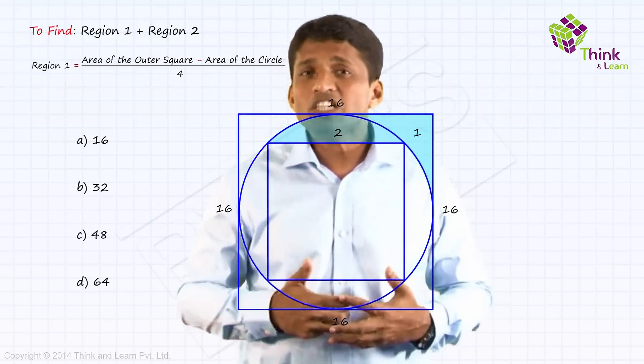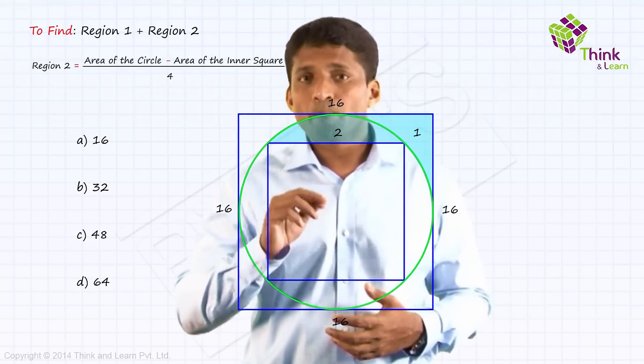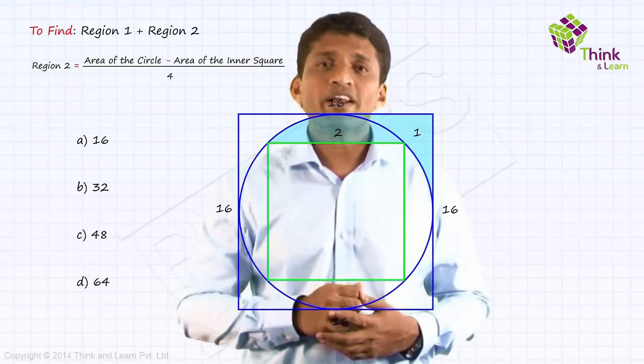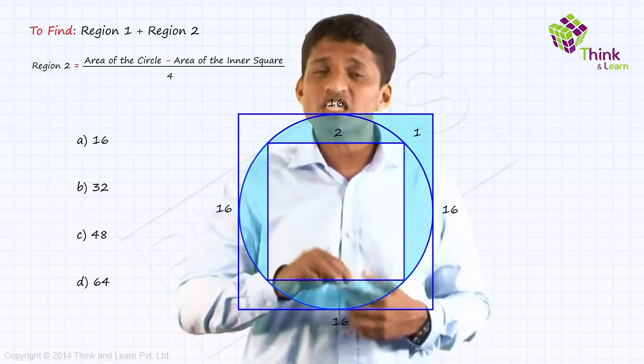Same way, how will you find region 2? Region 2 is area of the circle minus area of the inner square. And there again you will divide by 4, because as you can see, there are 4 regions like 2.